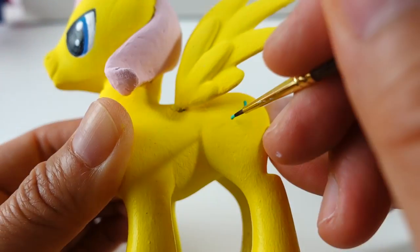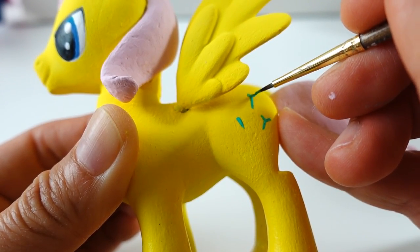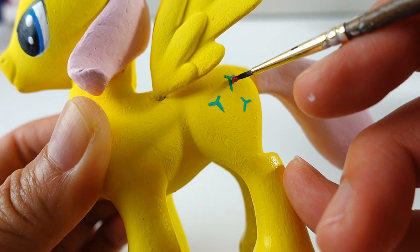And of course, we can't forget the cutie mark. We'll start with some green and then add the pink.